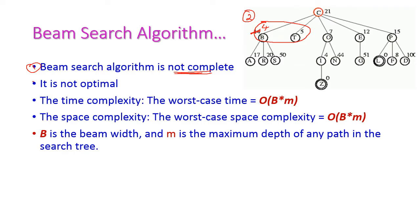Second, beam search is not optimal. We cannot find the optimal solution using this algorithm because it is highly dependent on the heuristic value alone. If the heuristic value leads to a sub-optimal goal, we reach that instead of the best one. Hence this is not an optimal algorithm. The time complexity and space complexity are both O(b × m), where b is the beam width and m is the maximum depth of any path in the search tree.